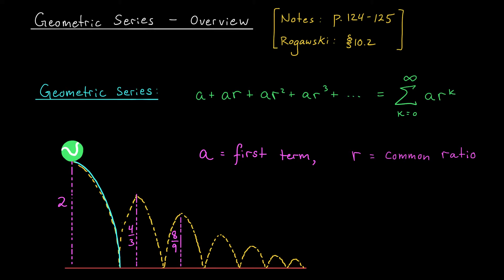To figure that out, you'd have to add up these quantities. Two meters at the start, then two thirds times two meters, then two thirds times that quantity, and so on. You'd end up with this infinite geometric series. The first term is two, and the common ratio is two thirds.